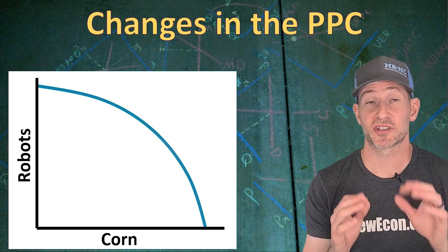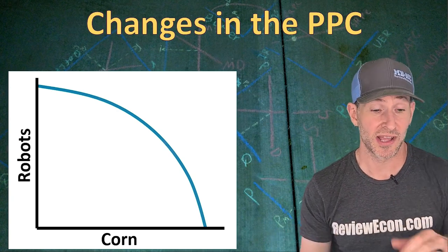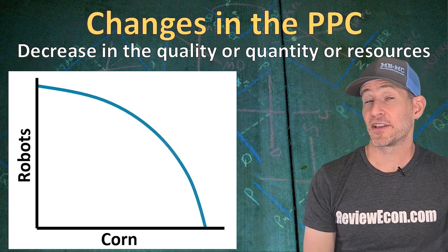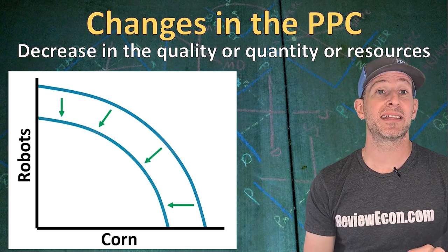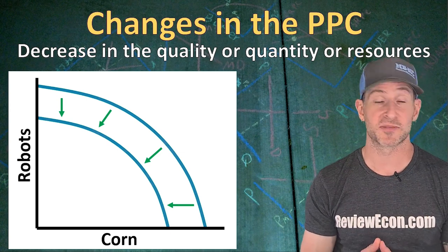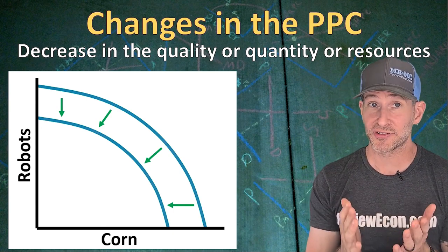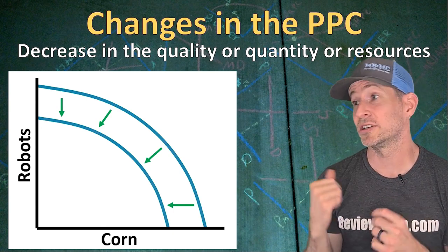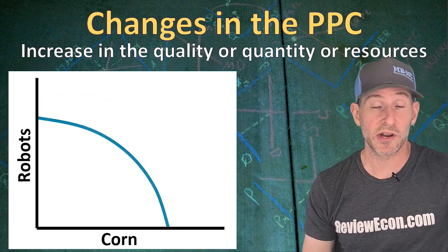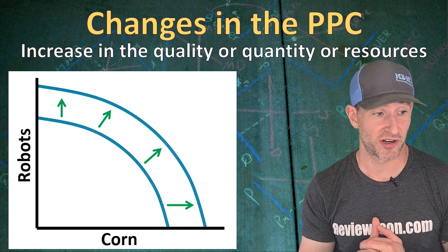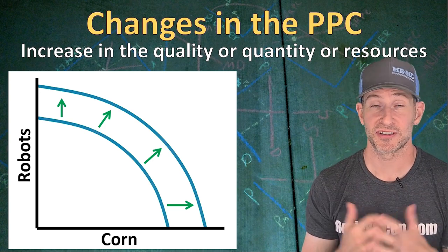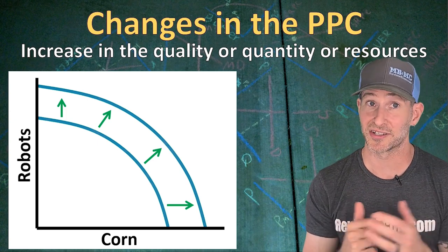The Production Possibilities Curve can change — it can shift in or shift out with any change in the quality or quantity of resources. If there's a decrease in the quality or quantity of resources, we see a shift inward, meaning it's no longer possible to produce as much corn or robots. A natural disaster that destroys land, labor, and capital could cause a shift inward like this. If we have an increase in the quality or quantity of resources, we see a shift outward. That could come from an increase in the physical capital stock, an increase in the size of the labor force, or investments in human capital — the skills and knowledge of workers.